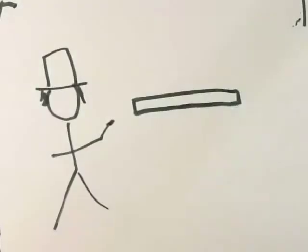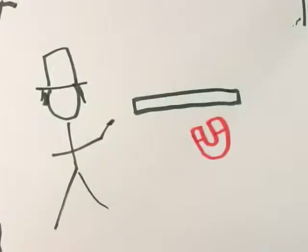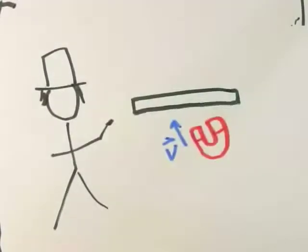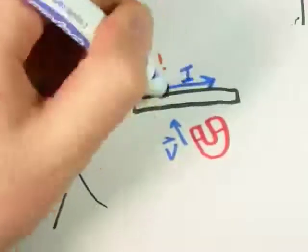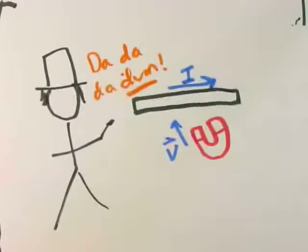And so later on, some other guy named Michael Faraday, he's my favorite dead scientist. He realized that the opposite could be true as well. If you had a magnetic field that was moving, wire without a current, boom, you get a current.